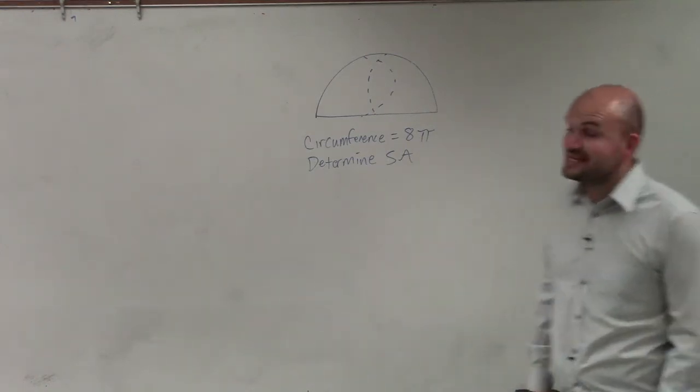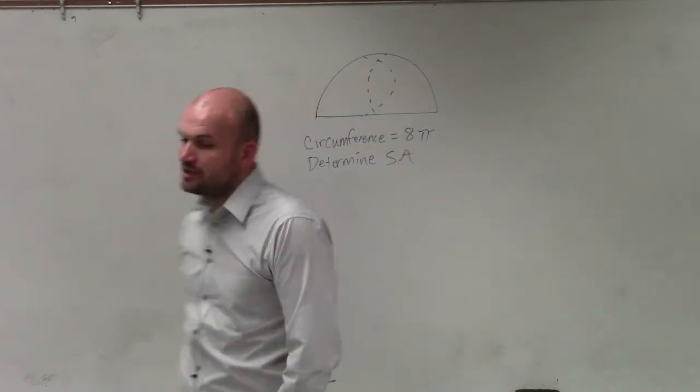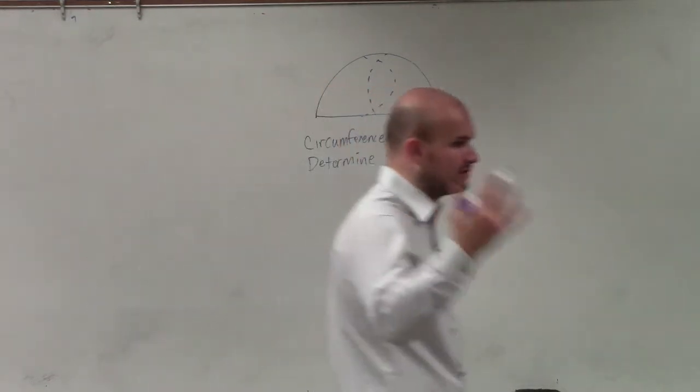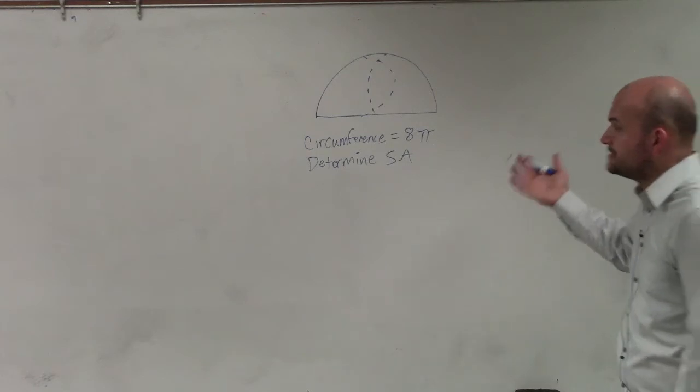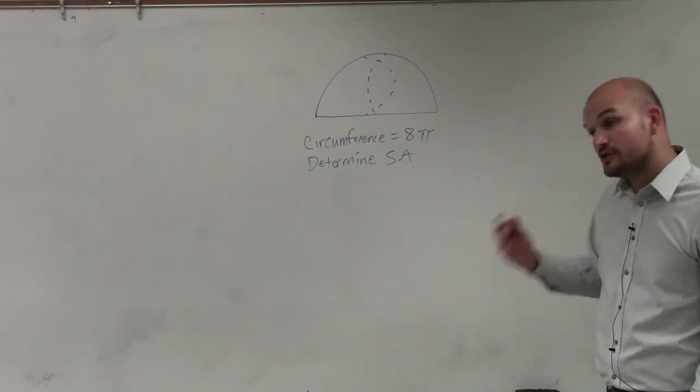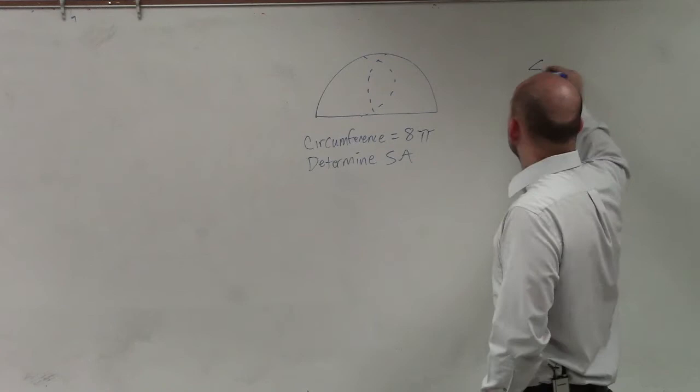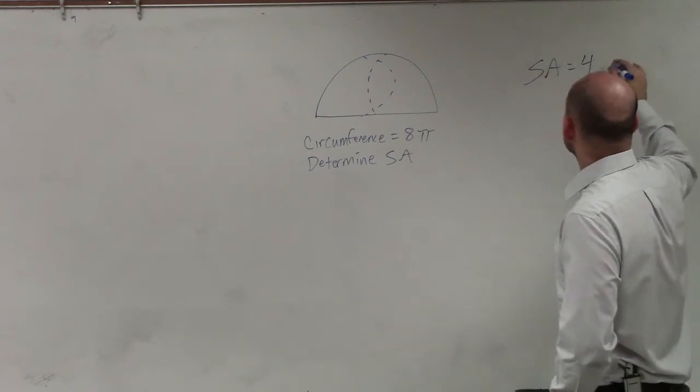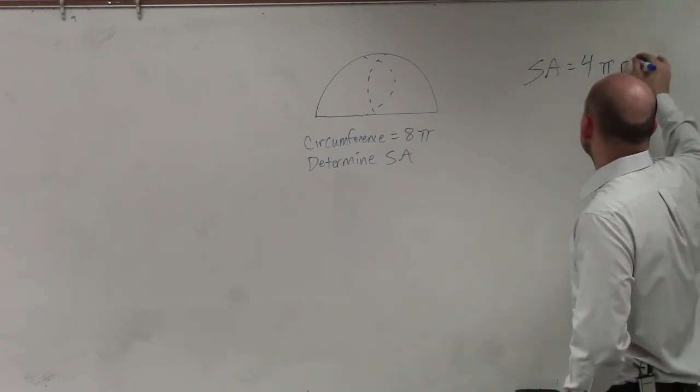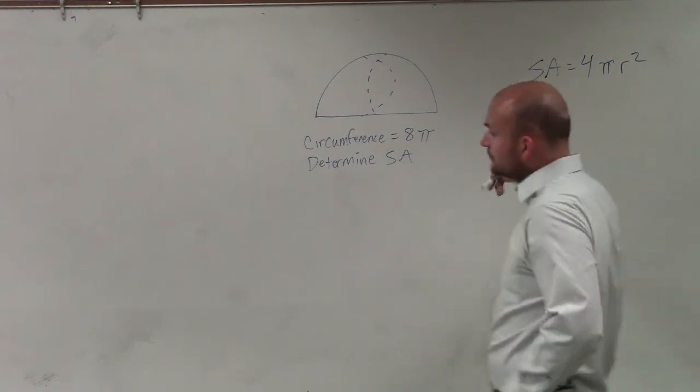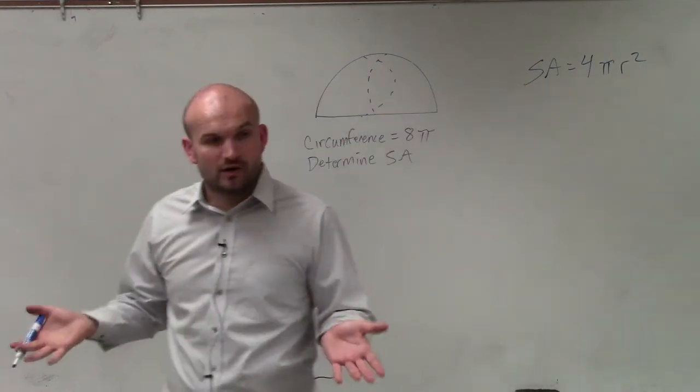So in this example, they say the circumference of this hemisphere, or the circle, is going to be 8π. Now, if we want to find the surface area, we need to first look at the formula for surface area, which is simply 4 times π times radius squared. So now, I just need to figure out what r is, right?